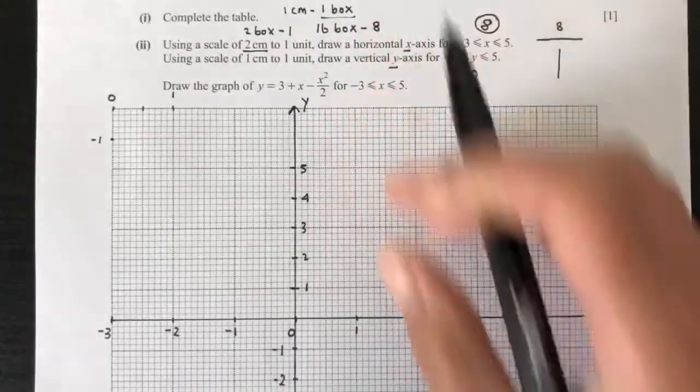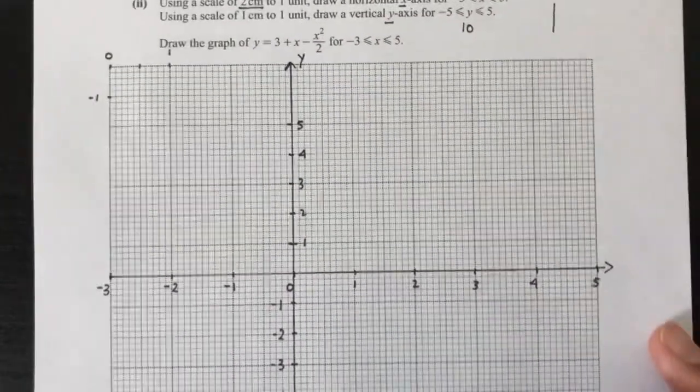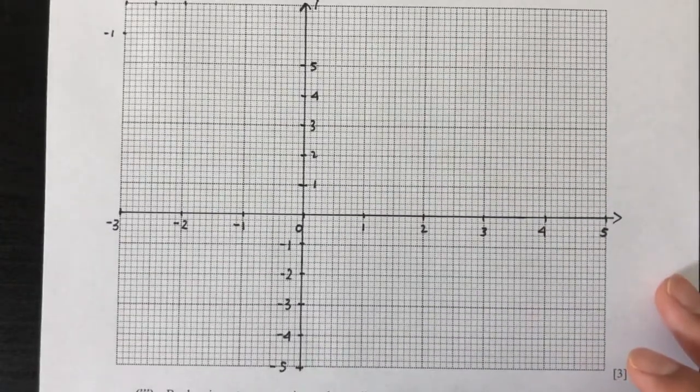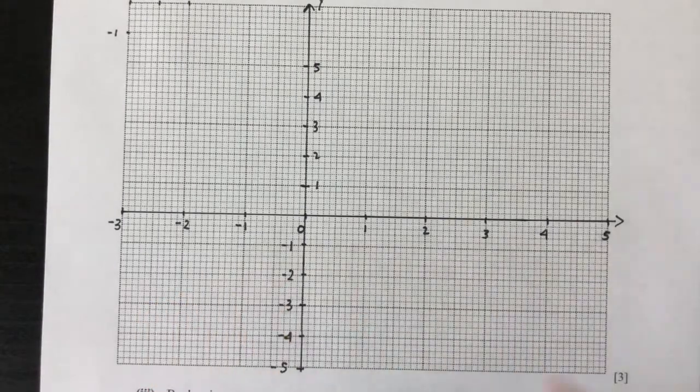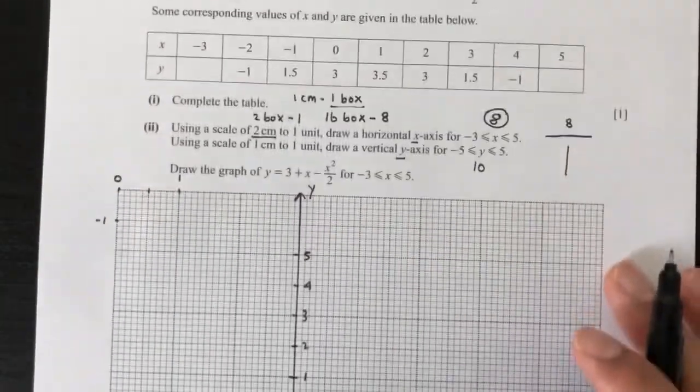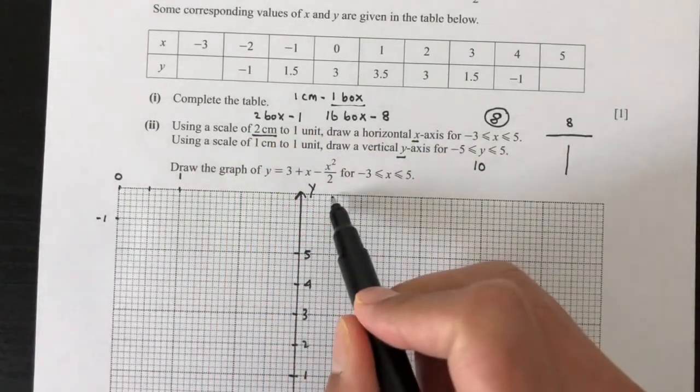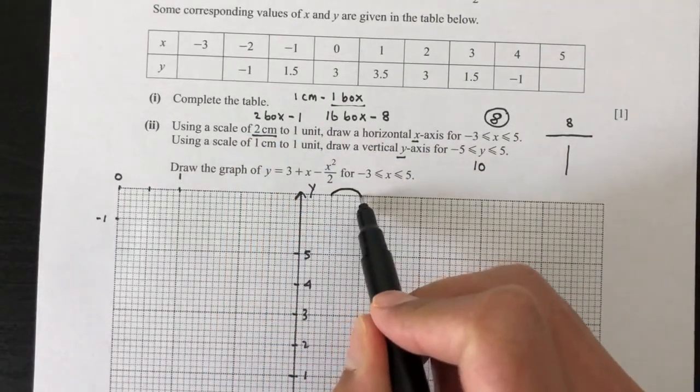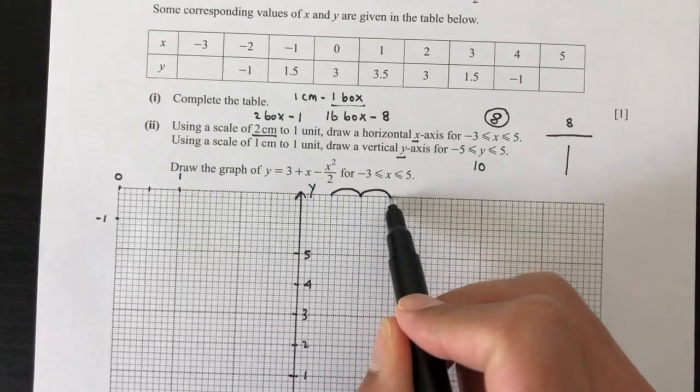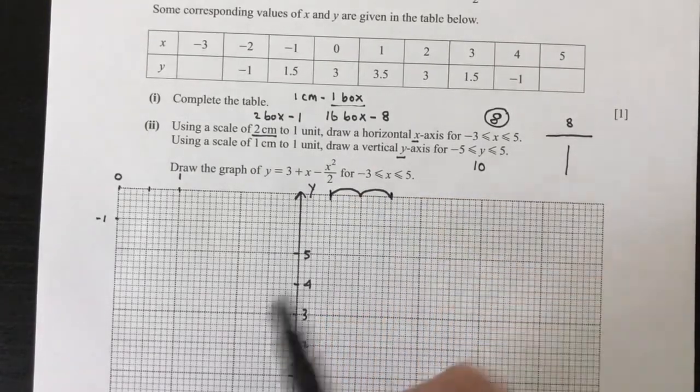Now if you have any extra space, that is okay. We don't care about that. But this is how you would usually find your axis and how you will plot your scale. Now just to recap, 2 centimeters is just the number of boxes. 1 box is 1 centimeter. And this is 2 centimeters.